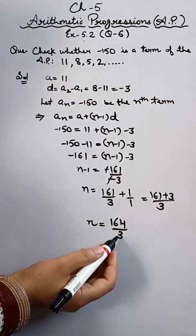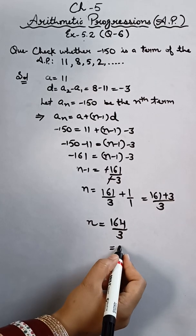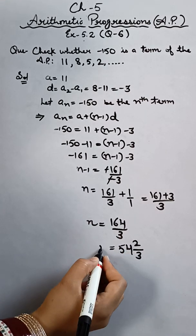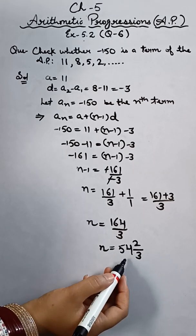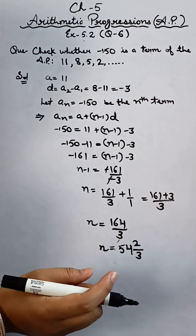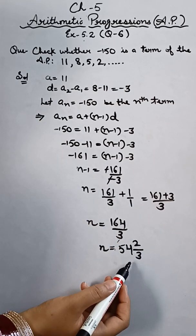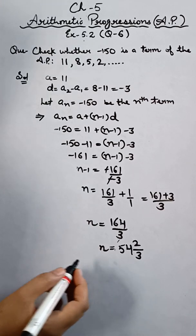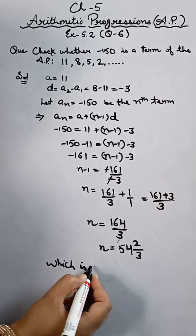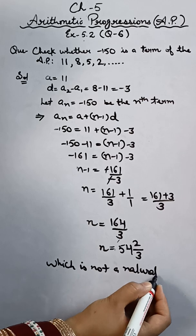If I check divisibility, this is not divisible by 3. I'm getting a mixed fraction, that is 54 and 2/3. Is this n a natural number? Can this be a term in the number of terms? Obviously, in any AP, the 54 and 2/3rd term cannot exist. Which is not a natural number.